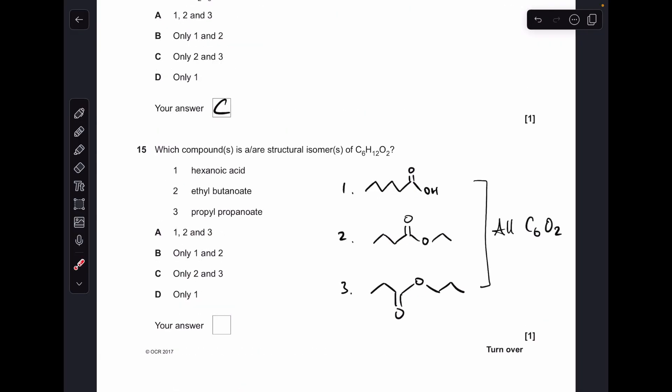Question fifteen. Just do a quick sketch of the three molecules. You'll notice they're all C6O2, so it's all about the hydrogens. Hexanoic acid has got 12 hydrogens, so does ethyl butanoate, and so has propyl propanoate. So all three were correct, and the answer was A.